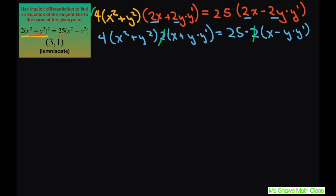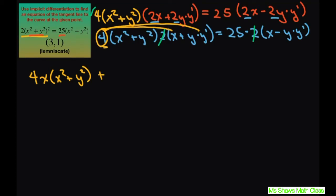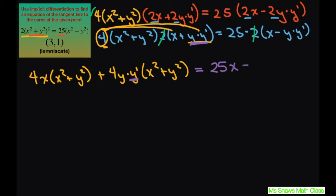The next step is to take this 4 and distribute it. So what you're going to get is 4x times x squared plus y squared, plus 4y times y prime times x squared plus y squared. What I'm doing is trying to separate out my derivative so I can solve for that. On the right hand side we have 25x minus 25y times y prime.